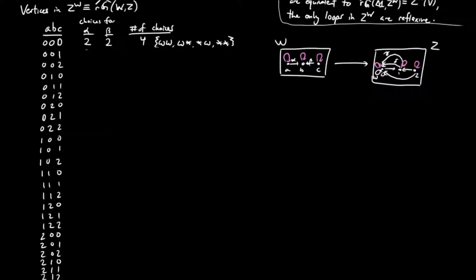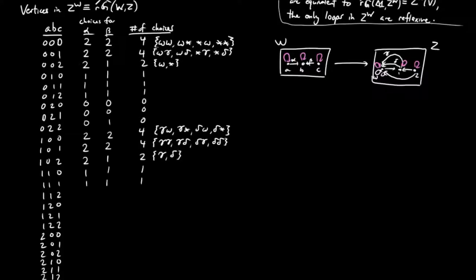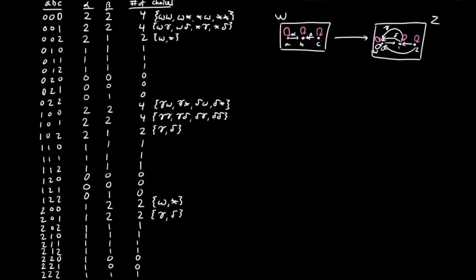They are given by sending both alpha and beta to omega, alpha to omega and beta to the distinguished loop, which we represent here by an asterisk, and so on. It is then straightforward to complete this table. We sum up the fourth column to conclude that Z to the W has 35 vertices. Hence, there are 35 morphisms from W to Z.